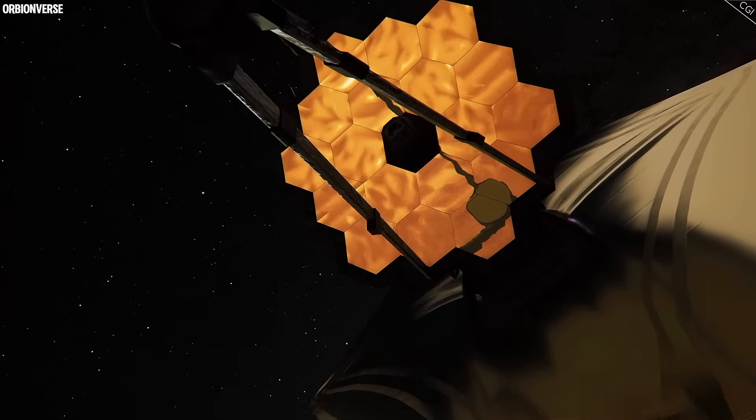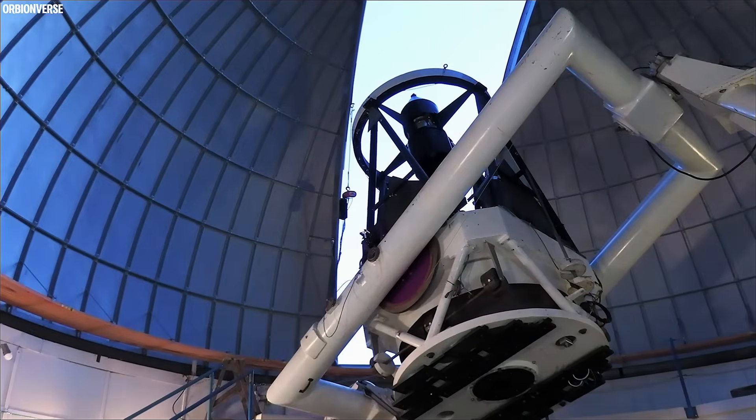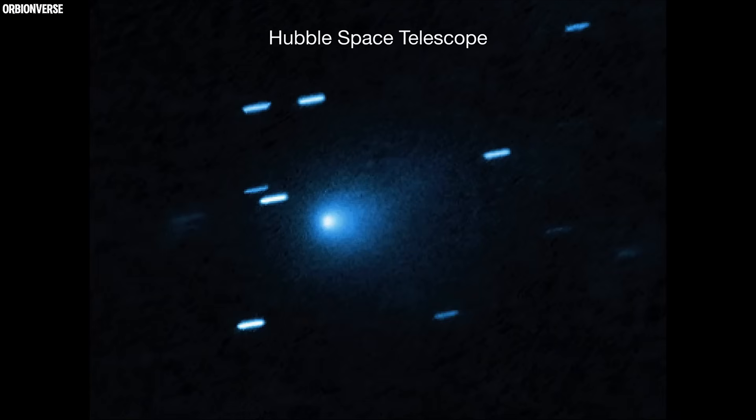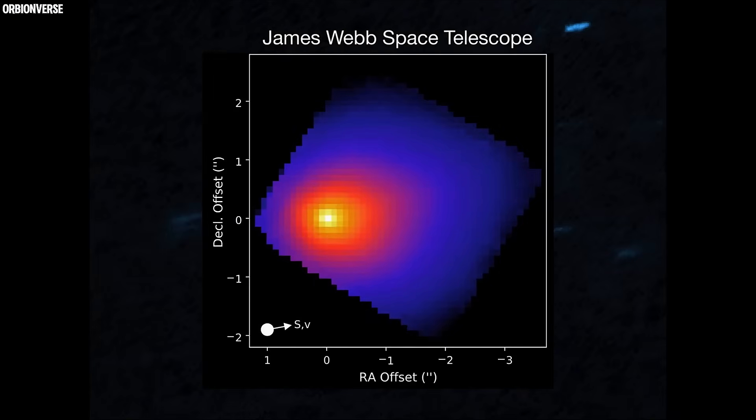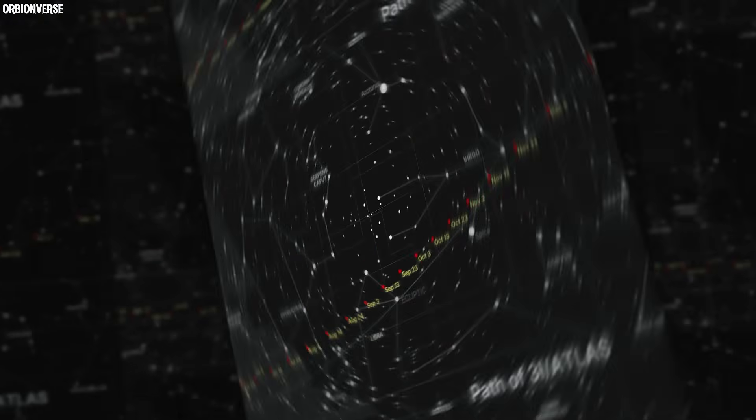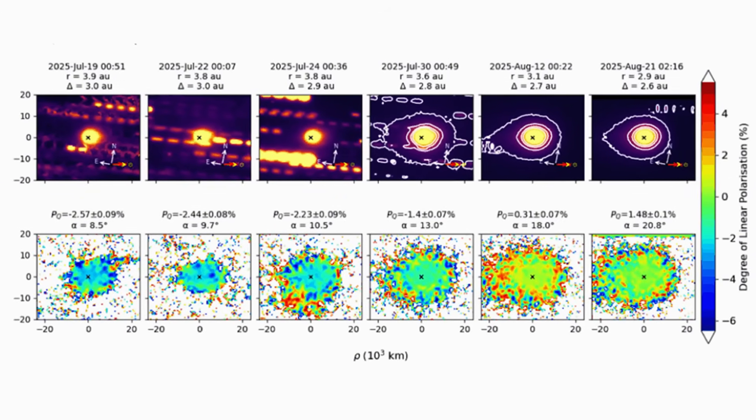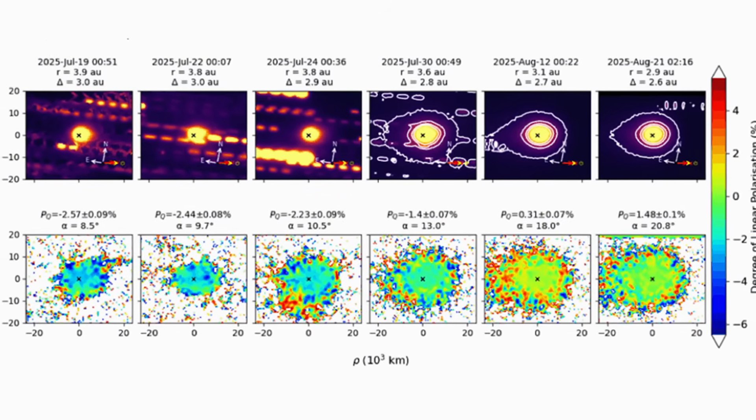The James Webb Space Telescope finally locked on for a three-hour observation. What it saw turned scientific disbelief into quiet panic. Inside the comet's glowing envelope were lines. Thin, luminous, geometric lines, interlocking hexagons rotating in sync with the pulses. They weren't random ice fractures. They were structure, design.